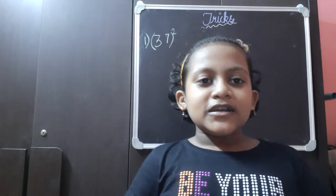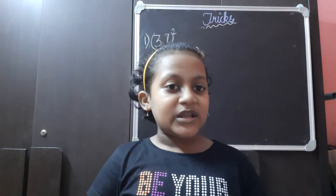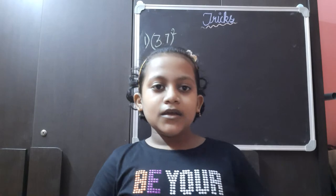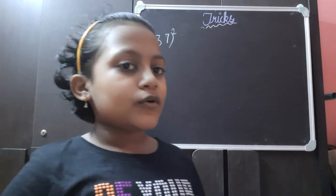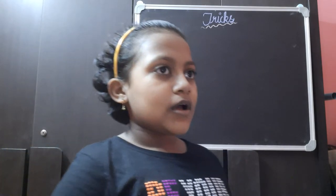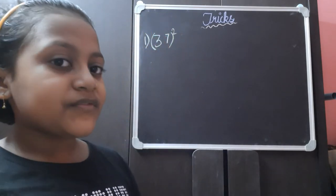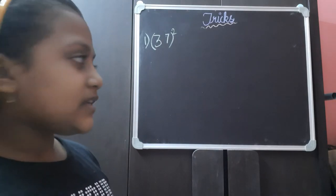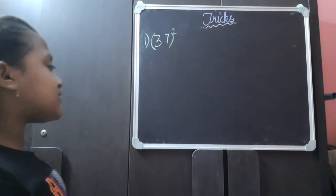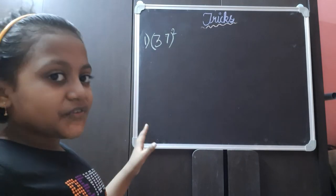Hi guys, this is Anushka. I think you remember me — I am returning after many days. In this video I am going to explain three new methods. In the first method I am going to explain squares. We are going to learn a new method for finding the square of a number if it is less than 50 or more than 50.